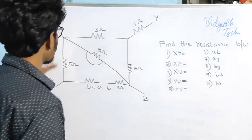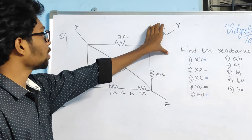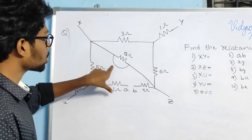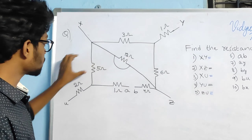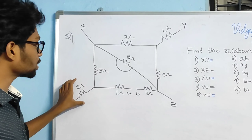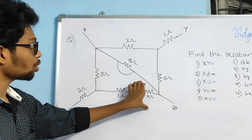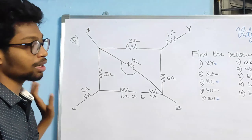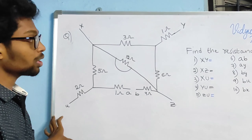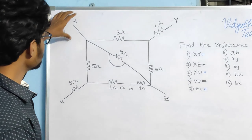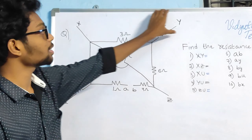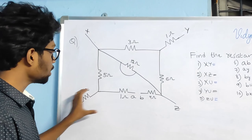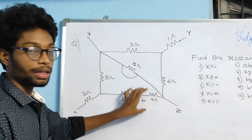The circuit has 3 ohm resistance, 1 ohm resistance, 12 ohm resistance and a short circuit, 5 ohm resistance, 2 ohm resistance, 1 ohm resistance, 4 ohm resistance and 6 ohm resistance. This is Y terminal, this is Z terminal, this is U terminal, and terminals A and B.